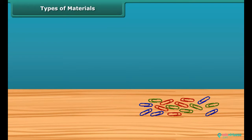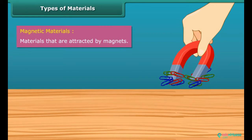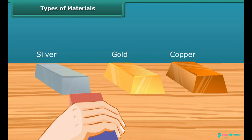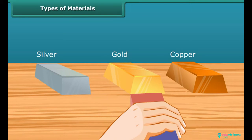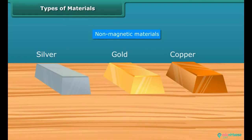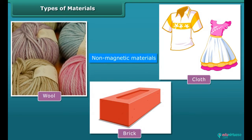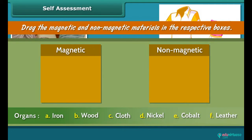Types of materials. Materials that are attracted by magnets are called magnetic materials — for example, screws, nuts, and bolts. Materials that are not attracted by magnets are called non-magnetic materials — for example, wool, cloth, and bricks. Self-assessment: drag the magnetic and non-magnetic materials into the respective boxes.